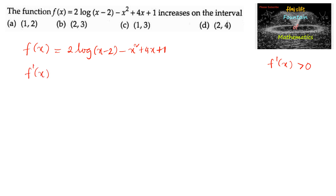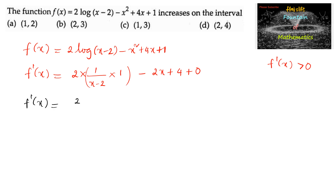f'(x) is equal to 2 times the differentiation of log, which is 1 upon (x minus 2), times the differentiation of (x minus 2) which is 1, minus the differentiation of x squared which is 2x, and the differentiation of 4x is 4, and the differentiation of a constant is 0. So f'(x) equals 2 upon (x minus 2) minus 2x plus 4.